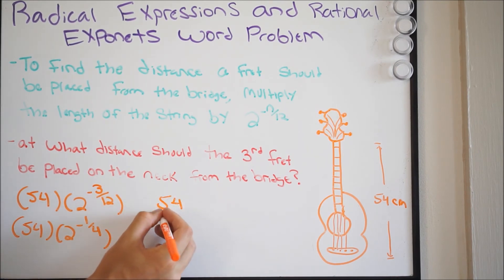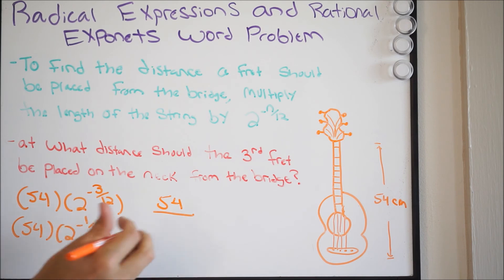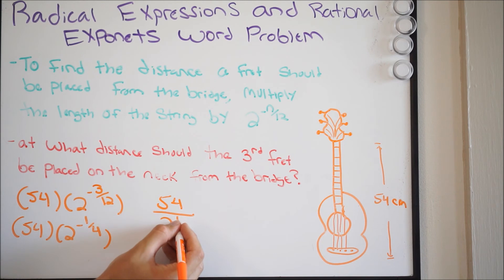So we'll have the following. We'll have 54 over, and we're going to bring this whole thing down, 2, but since we brought it down, again, the exponent becomes positive. Now, again, this is going back to your properties of exponents.